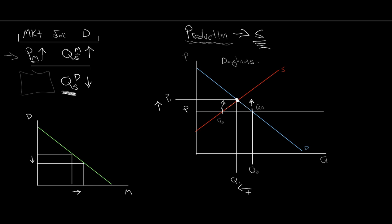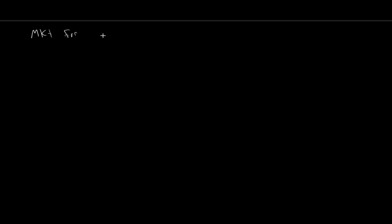Next question, very similar. In this case we're talking about complements of production. We're looking at the market for whole beans. The price of corn is going up. Note: beans and corn are complements of production. 'Production' is again the key — this is going to be with respect to quantity supplied. So price of corn up, quantity supplied of corn up.